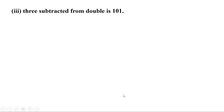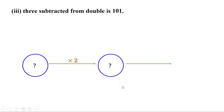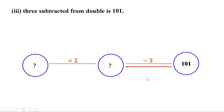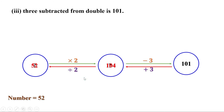Part 3: 3 subtracted from double is 101. Double the number, then subtract 3 to get 101. Coming back: add 3 to 101 to get 104. Now divide by 2 to get 52. The number is 52. Check: double 52 is 104, and when 3 is subtracted it is 101.